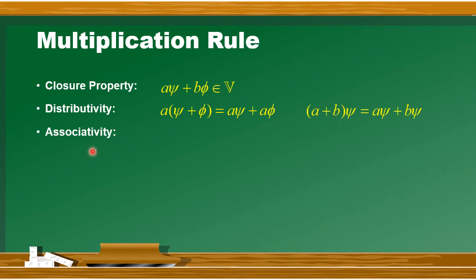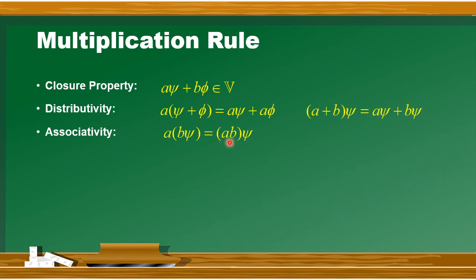Another property है associativity. आपके पास एक vector psi है और वो दो scalar numbers A and B के साथ multiply हो रहा है. एक तरीका यह होगा कि vector psi को scalar number B के साथ associate कर लें, then इसको scalar A से multiply करें. दूसरा method यह होगा कि A को B scalar से associate करके उसको vector psi के साथ multiply करें. जैसे मर्ज़ी associate कर लें - दोनों के result में कोई फरक नहीं आएगा.